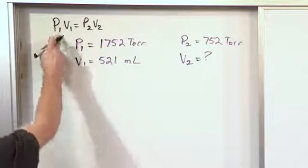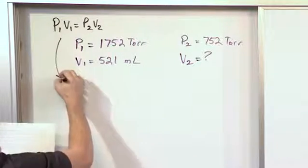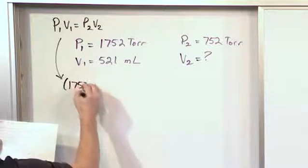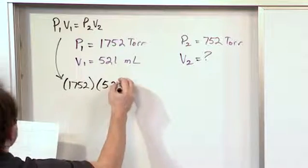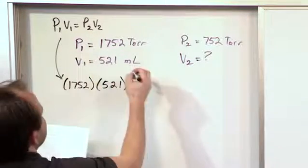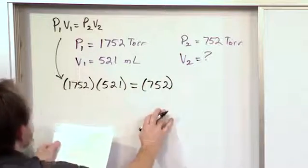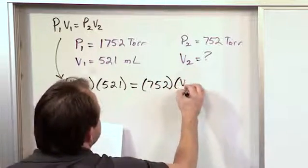So you just simply plug straight into Boyle's Law. You go here and say, alright, P1 is 1,752, V1 is 521, equals P2 is 752, and V2 you don't know what it is, so you just leave it here.